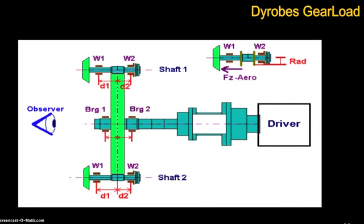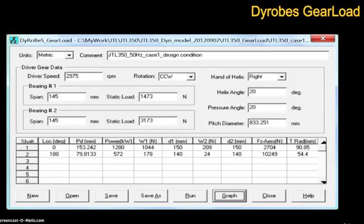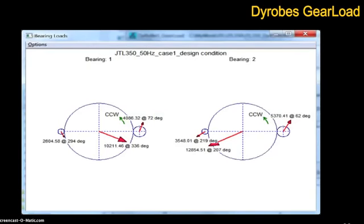And finally, with Gear Load, you can calculate the bearing loads due to gear and aero forces. Typical systems like this include a driver in the form of a motor or engine, which drives several high-speed shafts. To determine the loads, you input your pitch diameter, pressure, angle, and helix angle. Dyrobes Gear Load will show you the load on the bearing and the load vector. You need the load vector to properly orient your bearing. While the bearing itself may be fine, problems can result from a bearing that is not properly aligned.